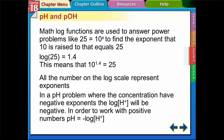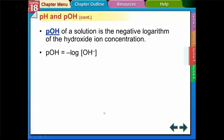In pH problems, concentrations have negative exponents for H+. To work with positive numbers, we define pH as the negative log of the H+ concentration. pOH is the same way — we take the negative log of the OH- concentration. The key fact is that pH plus pOH equals 14. That makes sense since the water product constant exponent is negative 14, and when we take the negative logs of H+ and OH-, those exponents must add up to 14.